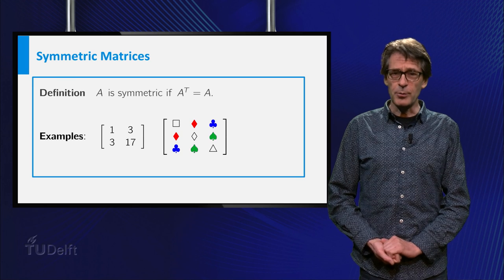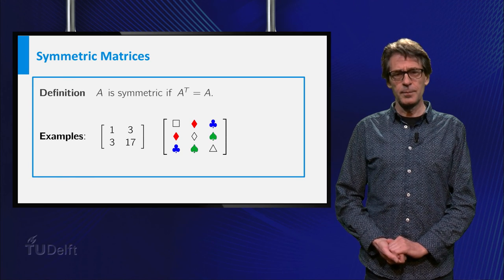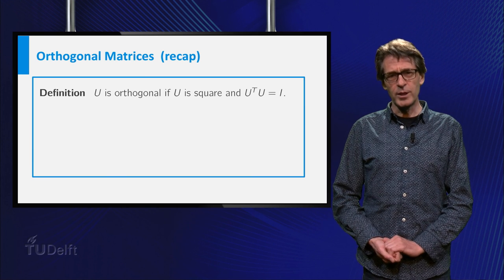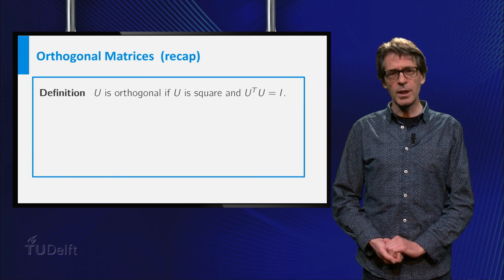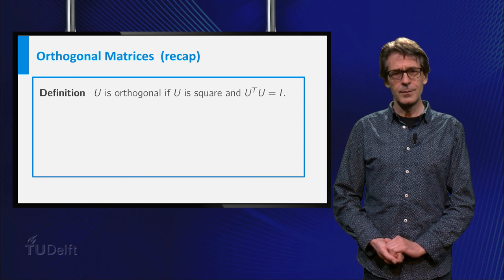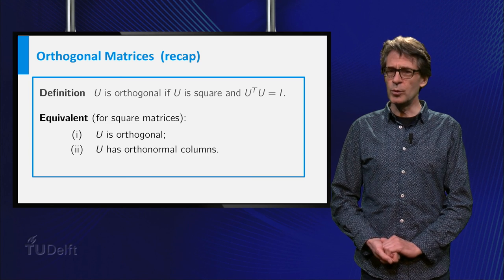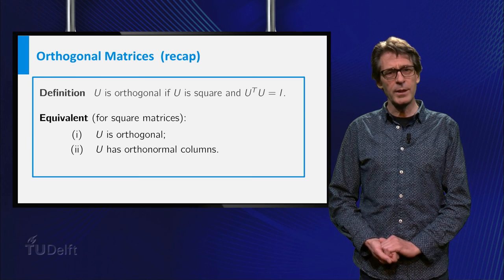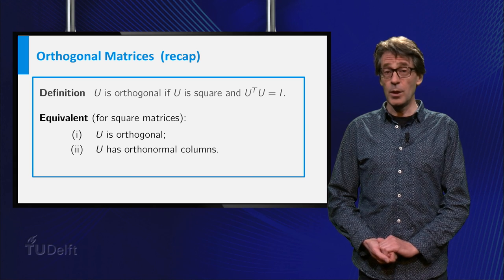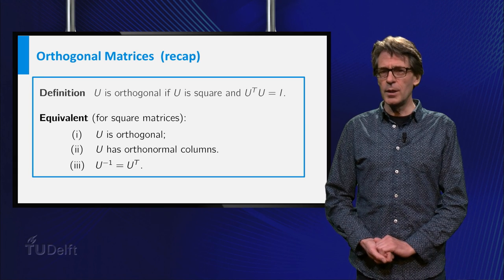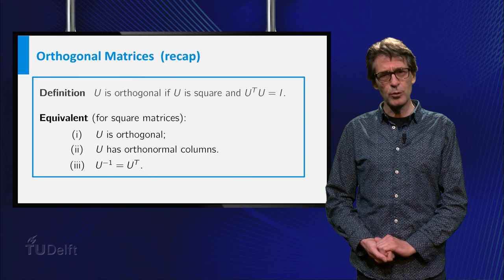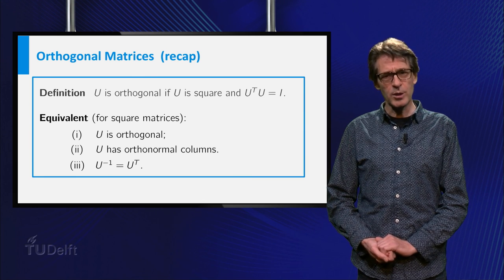In the previous chapter we already met orthogonal matrices. A square matrix U is orthogonal if U transpose times U equals the identity matrix. This is equivalent to the columns of U being orthonormal — in fact, they form an orthonormal basis for R to the n. Another way to put it: U is orthogonal if and only if the inverse of U is equal to the transpose of U.